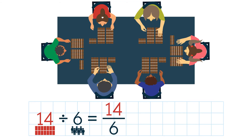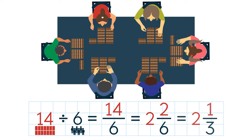But this is an improper fraction. We need to convert it to a mixed number, which is two and two sixths. We simplify and we get two and one third. So each student gets two and one third of a chocolate bar.